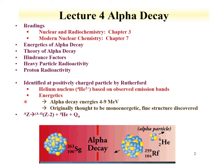The general trend for alpha decay, as we discussed earlier, is that a parent decays to a daughter. It loses two protons, and the A changes by 4 because two neutrons are also emitted. They're emitted as this alpha particle. And we have this Q value.